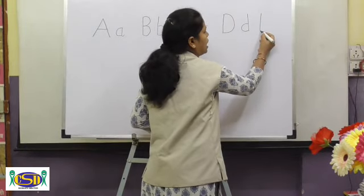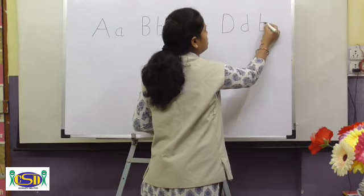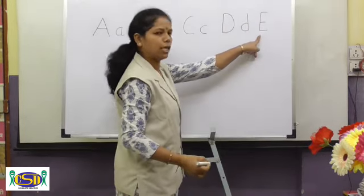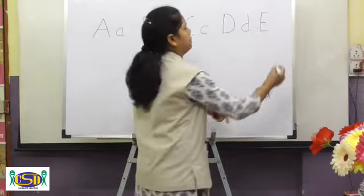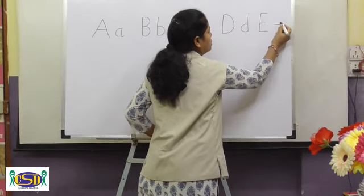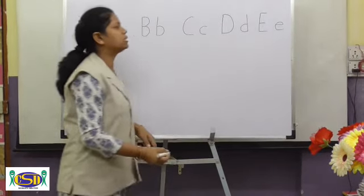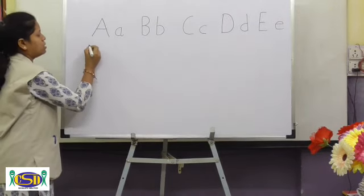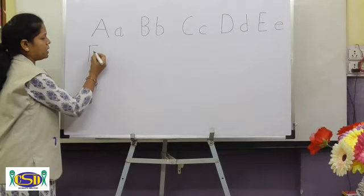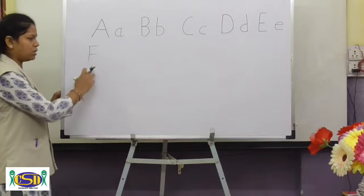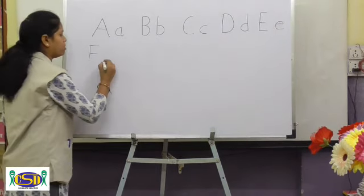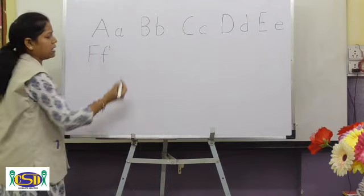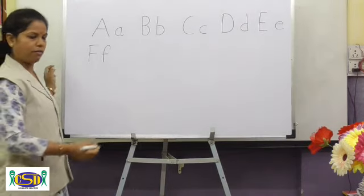Standing line, left curl — capital E. Standing line, right curl — small e. Standing line, slipping line, slipping line — capital F. Upward hook, slipping line — small f.